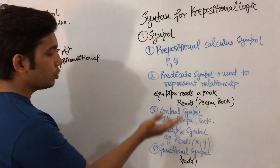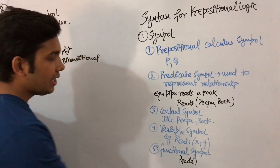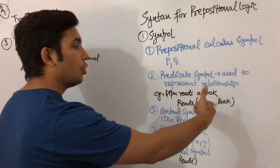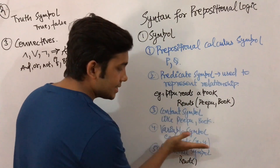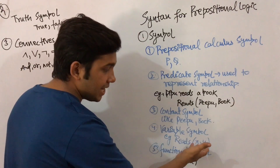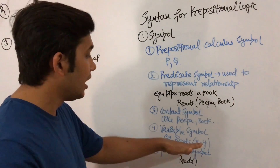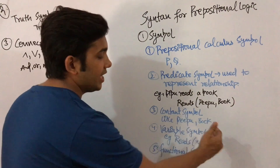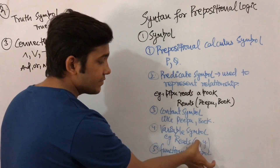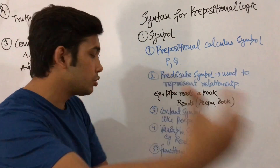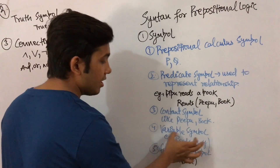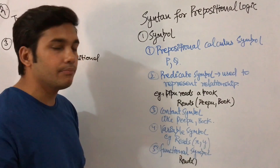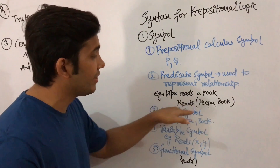The fourth type of symbol is the variable symbol. For example, in reads(x, y), x and y are variables. In place of x and y we can place any values — Ram reads newspaper, Ram reads magazine, Sham reads book. Since the values of x and y can be changed, they are called variable symbols.